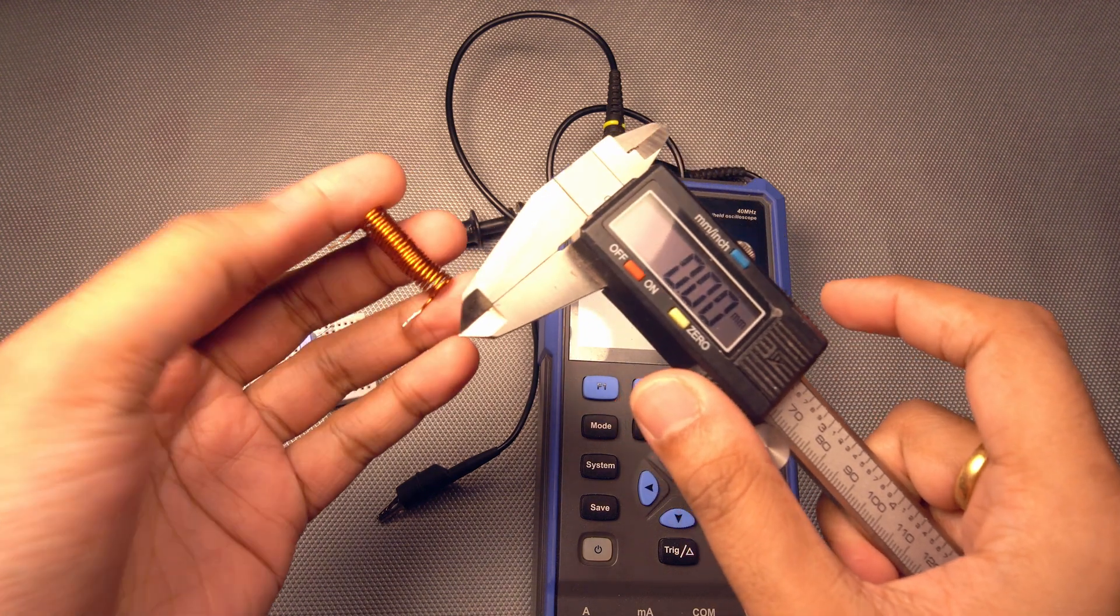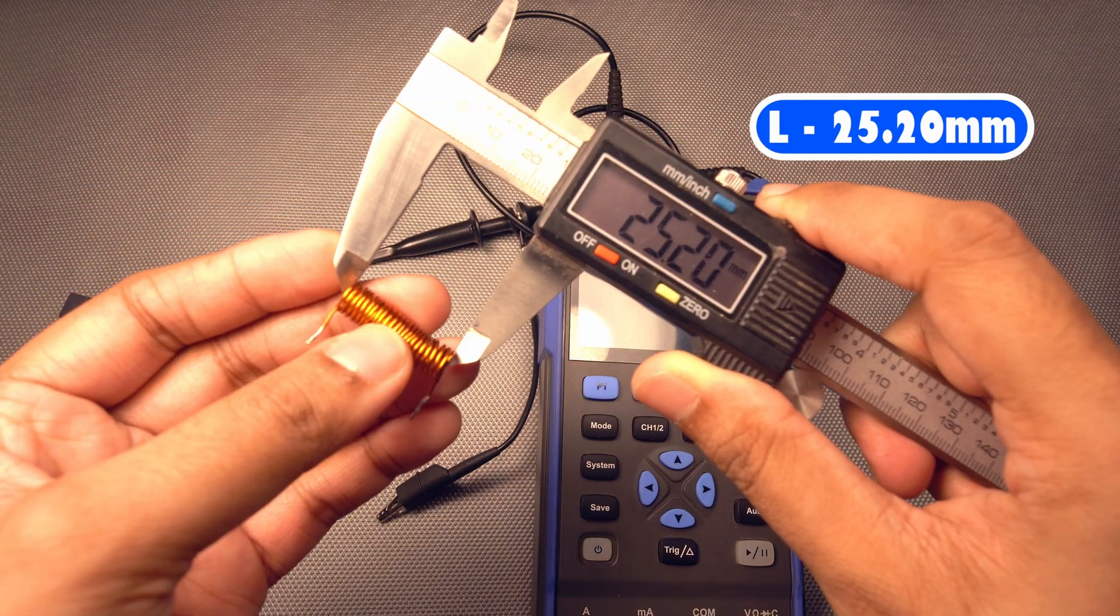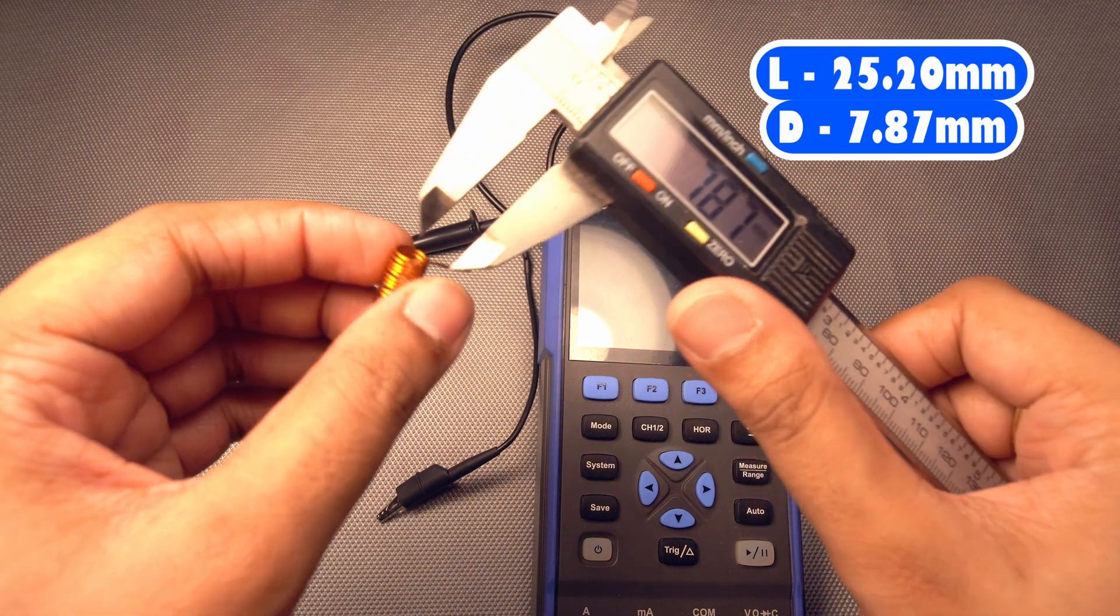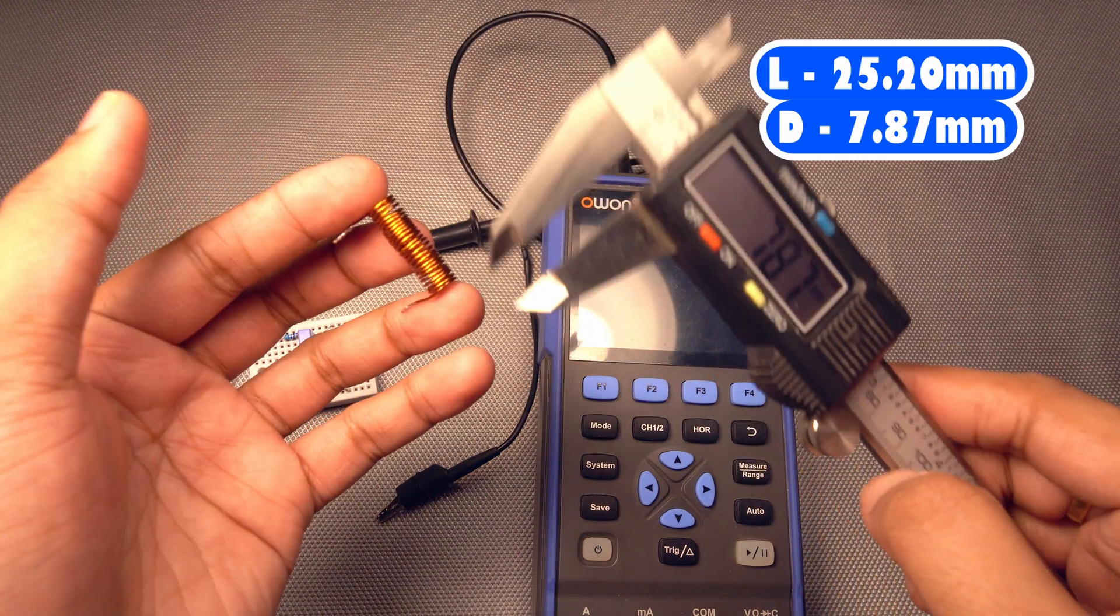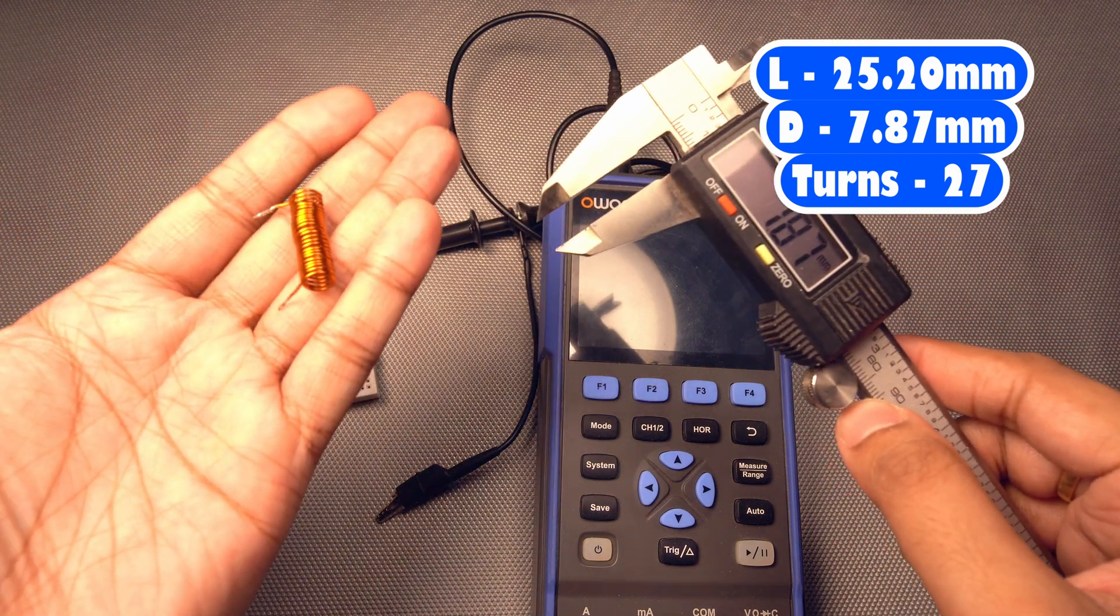Okay, so if you calculate the dimensions of this coil, this is 25.20 in length, 7.87 in diameter. And this is having 27 turns. So let us now go to the website and see what is the value.